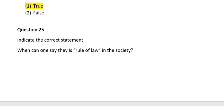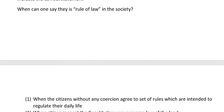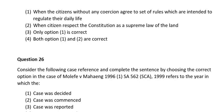Question twenty-five. Indicate the correct statement. When can one say there is rule of law in society? Number one, when the citizens without any coercion agree to set up rules which are intended to regulate their daily life; number two, when citizens respect the constitution as a supreme law of the land; number three, only option one is correct; number four, option one and option two are correct. The correct answer is number four: both option one and option two are correct.